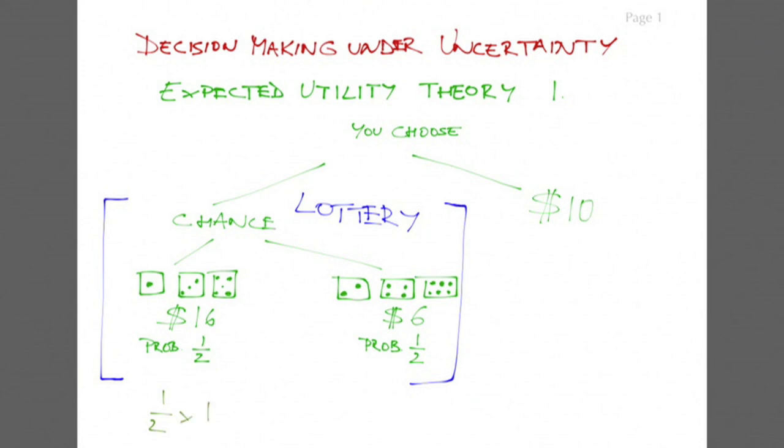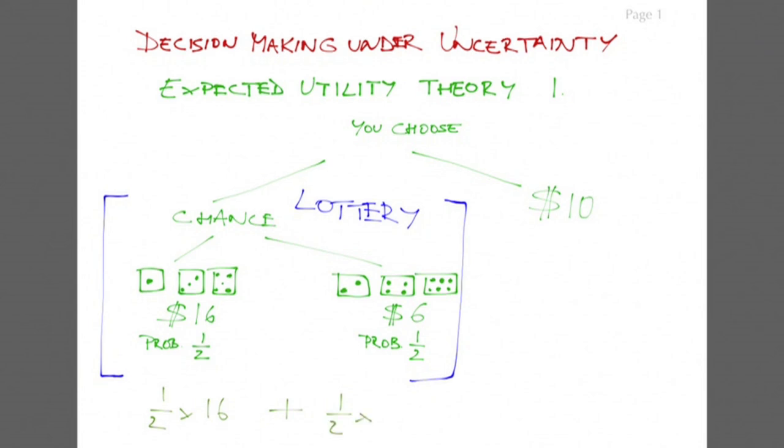You might say, since we have these probabilities, let's calculate the expected value of this game. That would give us 1/2 times 16 plus 1/2 times 6, which is 11. We could now compare this to the other option, 10, and conclude that it pays to play the game. So we have one way to make a choice under uncertainty: compare expected values.